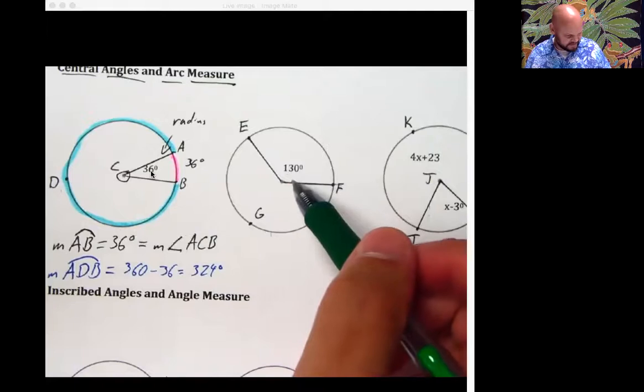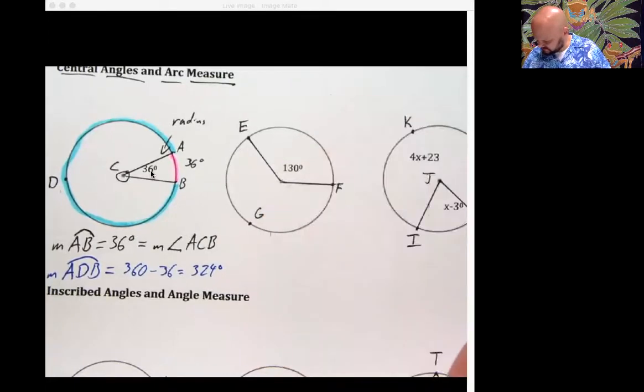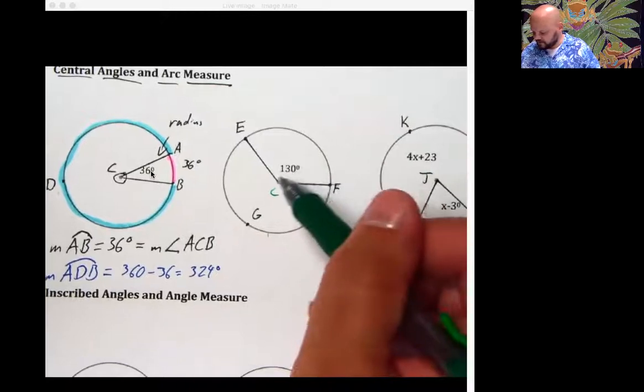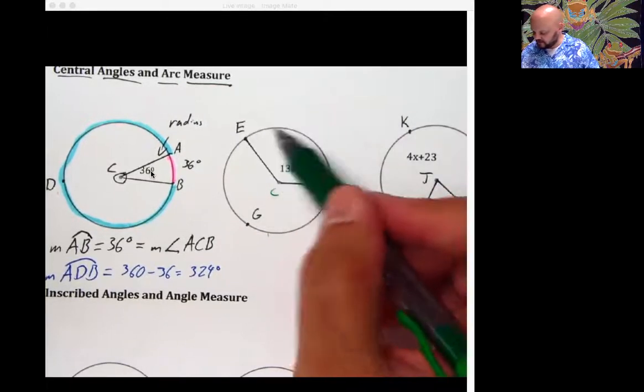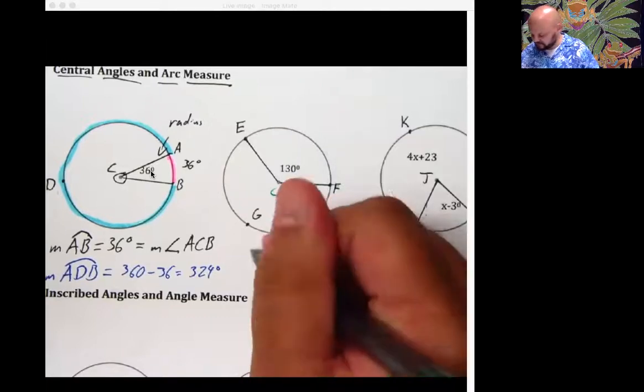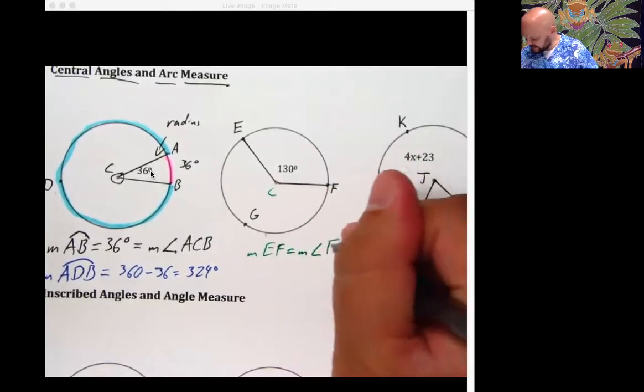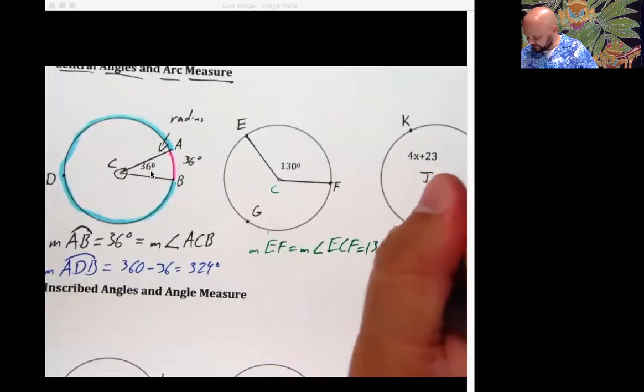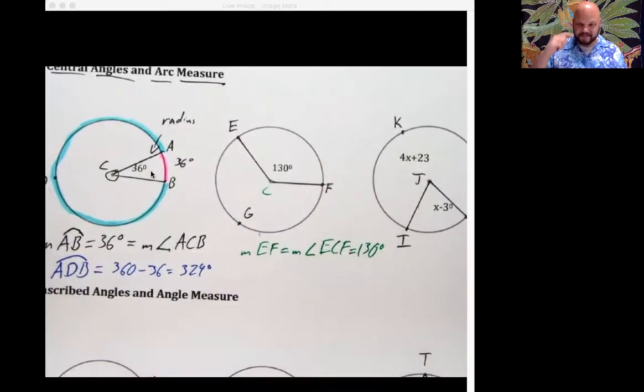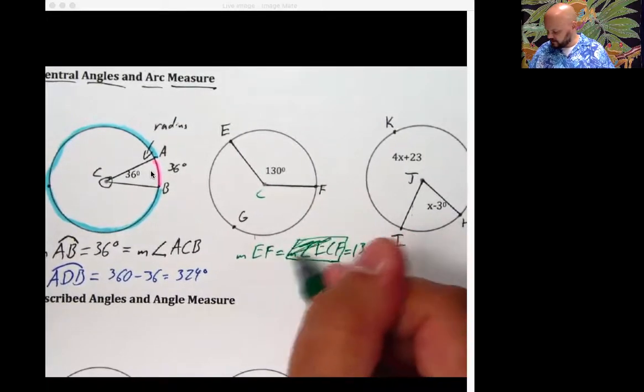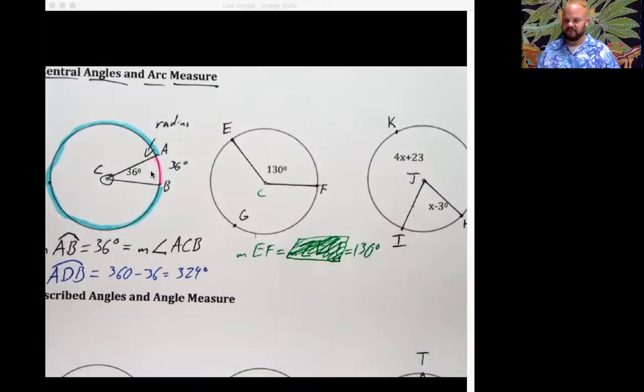I've got, I need a center. Let's make this C again. We're just going to keep making the center C for center of a circle. I've got a 130 right here. So if I want to know the arc measure of EF, I just go back to this and I'm like, oh, the measure of EF is the same as the measure of angle ECF, which is 130. Now we don't necessarily need to write that it's the same. We can just skip to the measure of EF is equal to 130. I was just making sure you knew that the reason why is because of that angle in the middle.